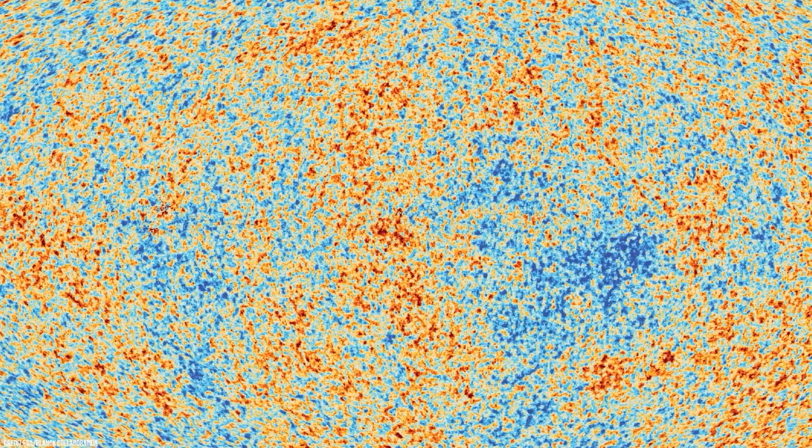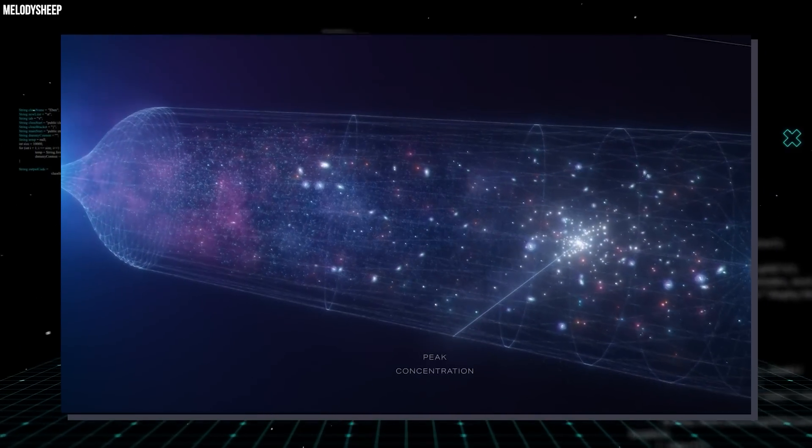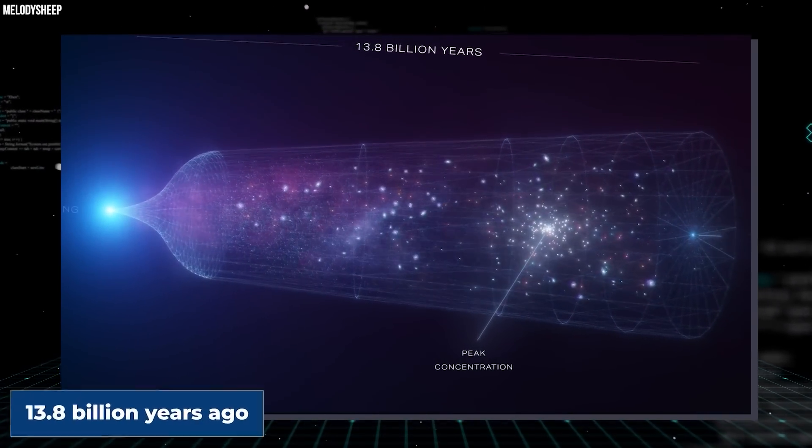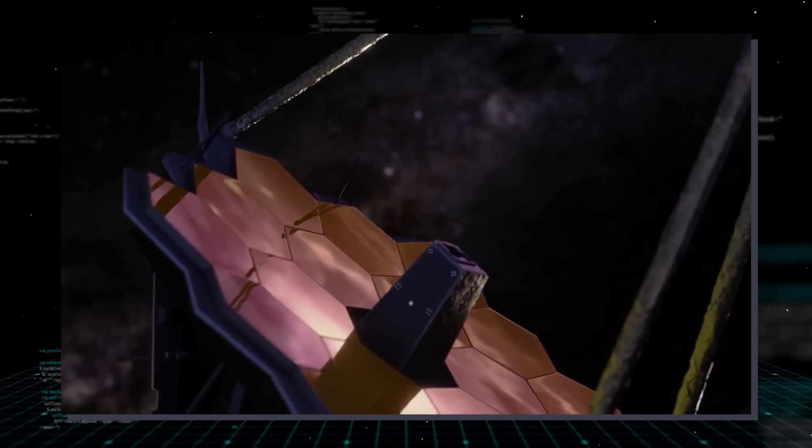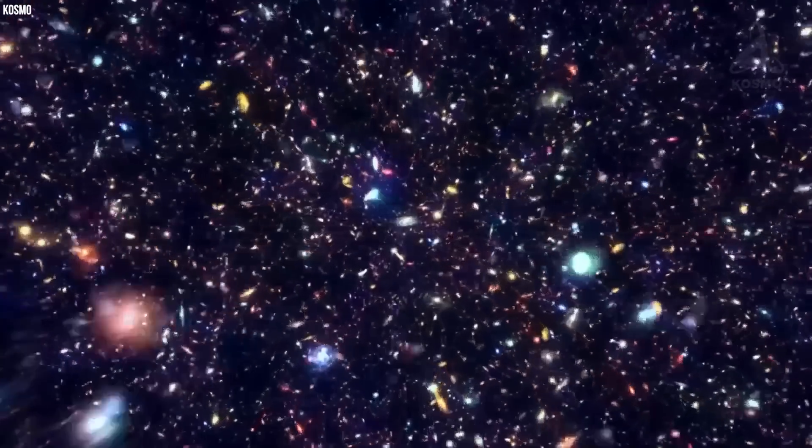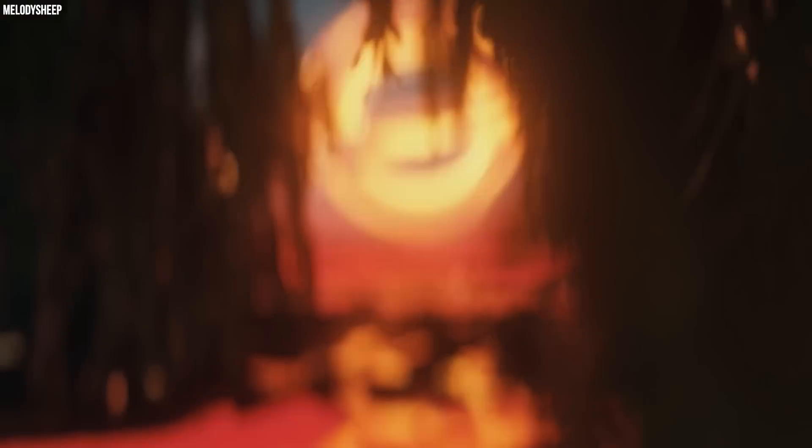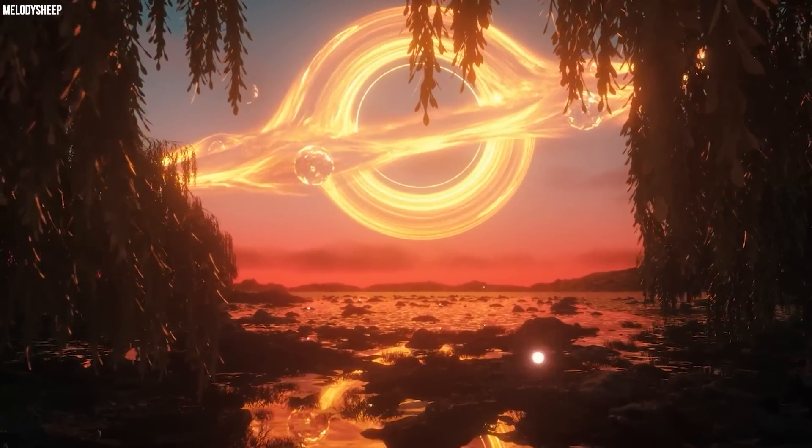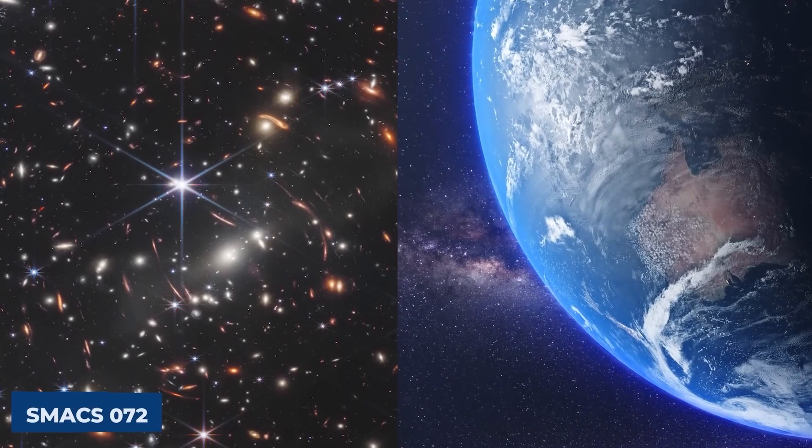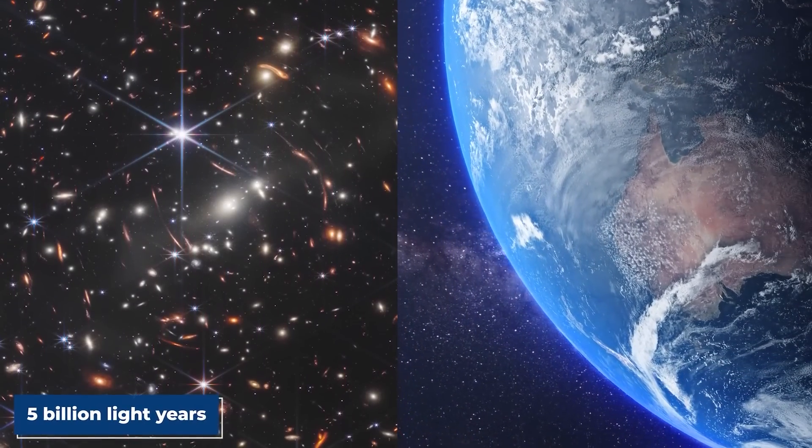In this image, we can appreciate the light emitted 13.5 billion years ago. That's pretty close to the estimated beginning of the universe 13.8 billion years ago. This deep field image from the James Webb Space Telescope showcases its ability to harness the gravitational forces of galaxy clusters. It then magnifies distant galaxies behind these clusters, providing scientists with incredibly clear images. The SMAX 0723 cluster we see in this picture is around 5 billion light years away from Earth.